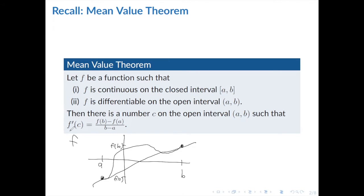Now, the left side says that there's a number c in between a and b, and that the slope of the tangent line at c — this one, f prime of c — is the same as the slope of that secant line. So the mean value theorem just says this: there is a c with this property. And I hope this drawing can help you remember the formula.